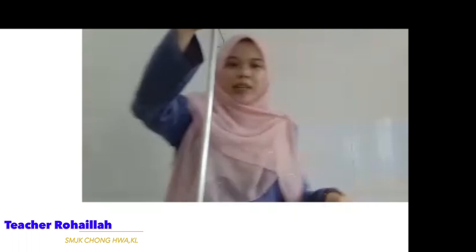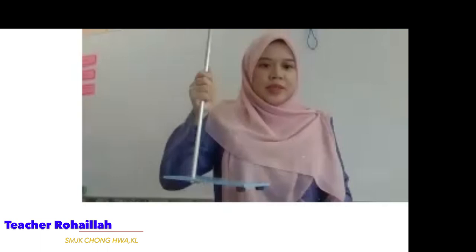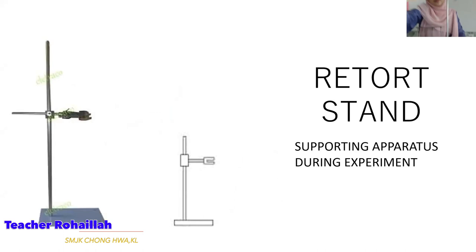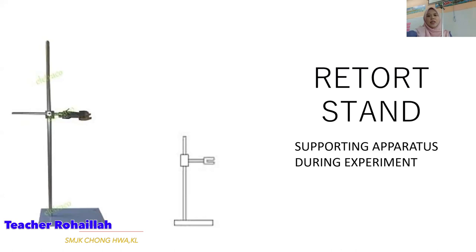Next: the retort stand. This is larger than the tripod stand. The retort stand is used to support apparatus during an experiment. This is the symbol for drawing the retort stand. You need to know how to draw it because for experiment reports you will have to draw some of the apparatus.